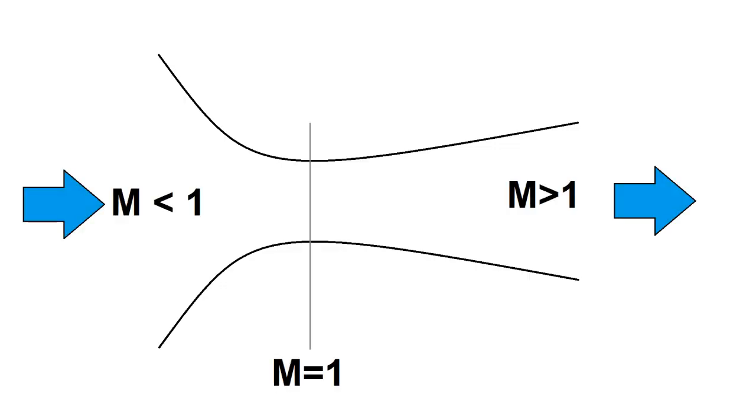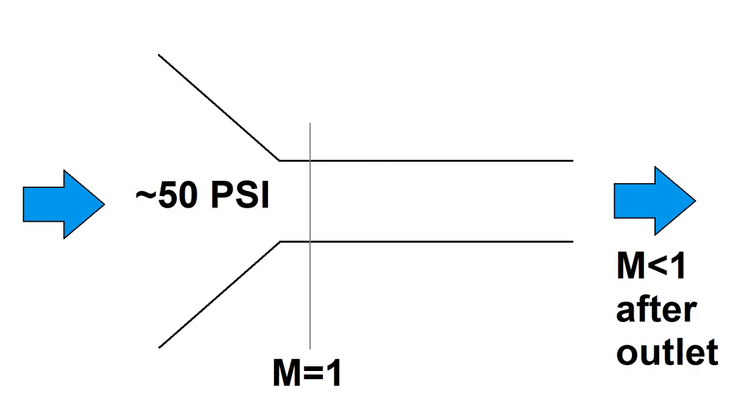One potentially major improvement that I didn't cover in this video is the use of a converging-diverging nozzle, just like what a rocket has. Currently, my inlet nozzle is just a simple 1/16th hole that chokes the flow so that output is sonic.